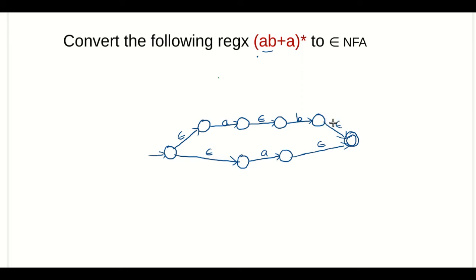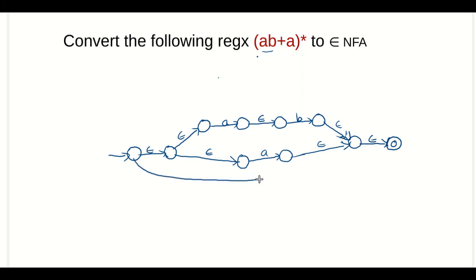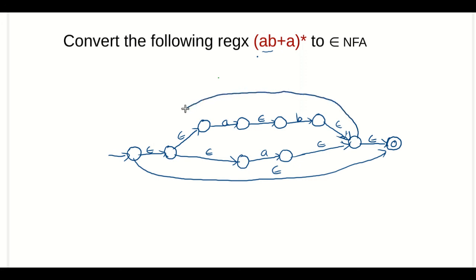Now we have to modify this NFA to accept (aB union a) whole star. We remove the current final state and starting state, then add a new starting state. From the new starting state we add an epsilon transition into the machine, and add a new final state. From the inner final state we add an epsilon transition to the newly added final state. To accept epsilon, we add an epsilon transition from the initial state to the final state. To accept (aB union a)* we also add an epsilon transition from the final state back into the machine. This is the final NFA that accepts (aB union a)*.